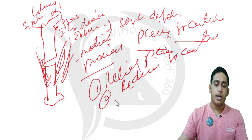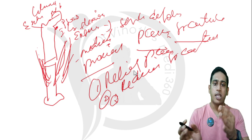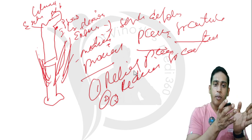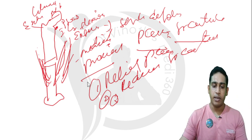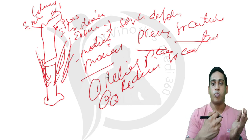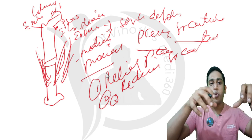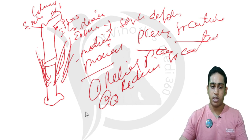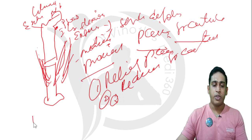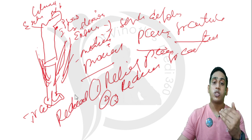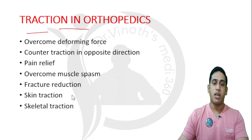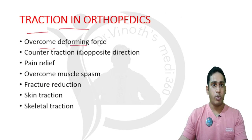The muscle spasm has already been overcome in the preoperative setup. Intraoperatively, we need not work more to bring out the reduction, because in the preoperative setup itself we have already reduced the fracture and kept it in traction to maintain the reduction. These are the functions done with the help of traction — to overcome the deforming force acting at the joint or the limb.